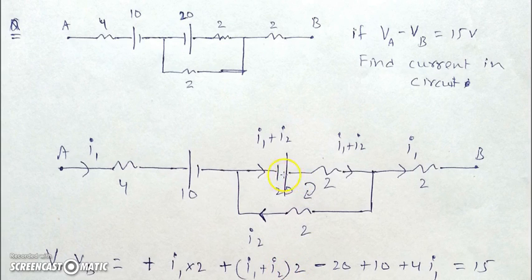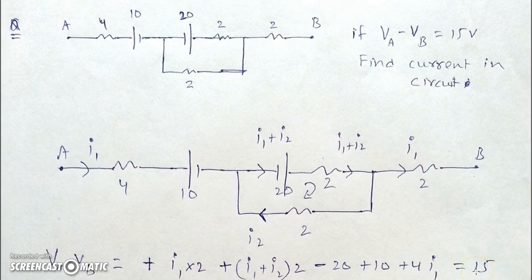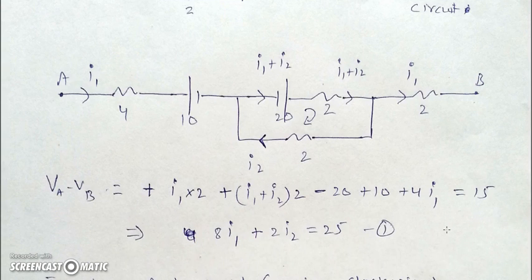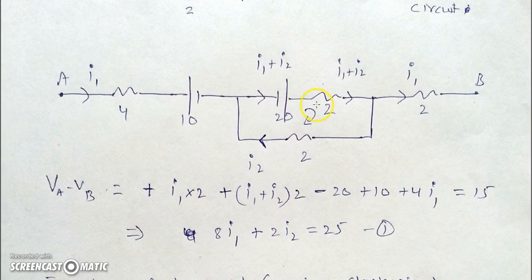Jumping the battery from positive to negative gives −5, then jumping from negative to positive gives +10 for the next battery. Crossing the 4-ohm resistance opposite to the direction of current gives +4I. It is given that VA − VB = 15, so we obtain our first equation. For the second equation, we traverse the inner loop — I assumed clockwise — starting from a convenient point.